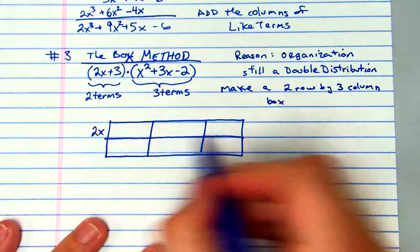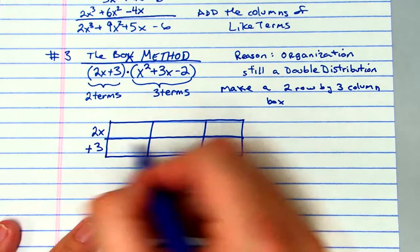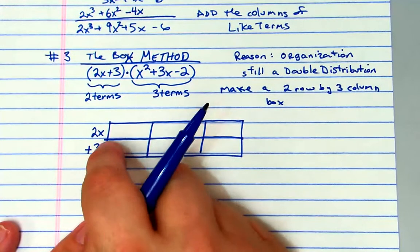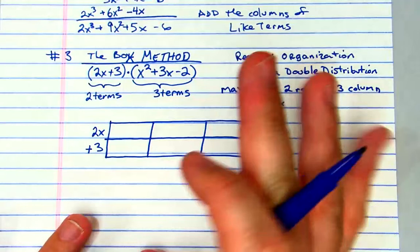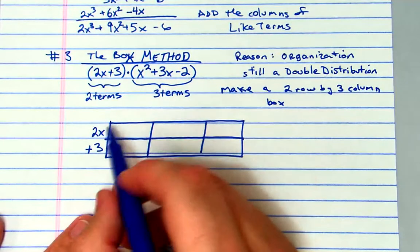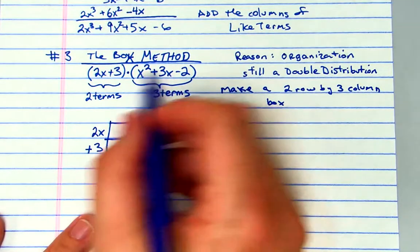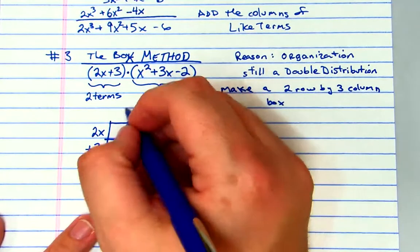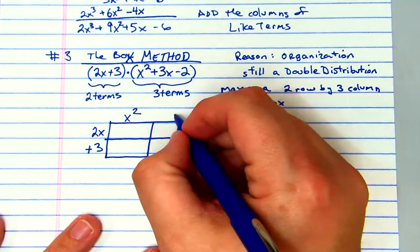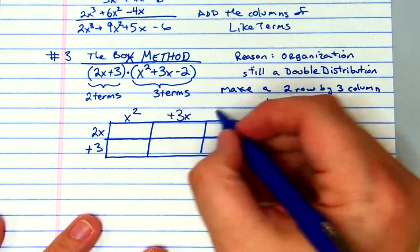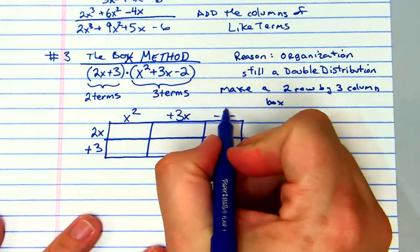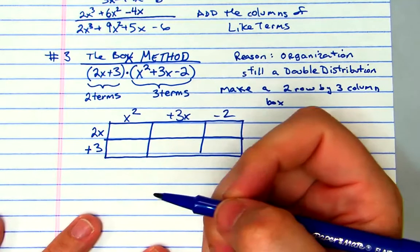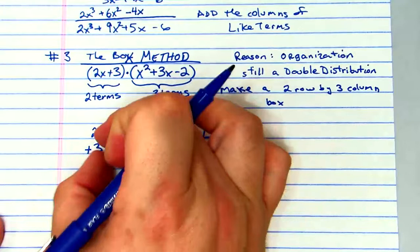Now what I'll do is I'll take the 2x plus 3. The 2x is going to go in the first row and the plus 3 is in the second row, just like the distribution properties that we used in the other times. It's going to be 2x times all that and 3 times all of that. I'm going to take the three terms here - I'm going to put an x squared there, a plus 3x there, and a minus 2 there.